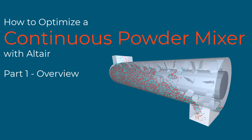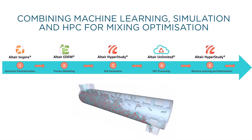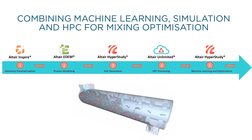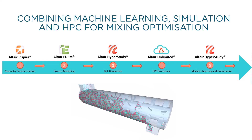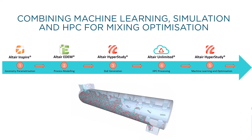In the world of process engineering, achieving a homogeneous mixture is often a critical objective. With the industry's transition to continuous mixing for faster and more efficient production, achieving reliable mixing is crucial but may be difficult to attain by purely relying on physical trial and error. This first part of our video series on optimizing a mixing process will give an overview of how we can use Altair's portfolio for combining machine learning, simulation, and high performance computing.